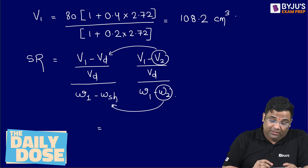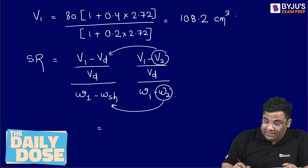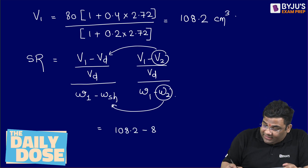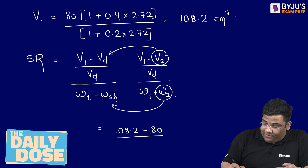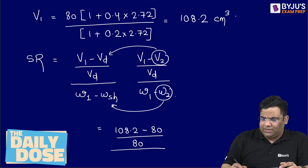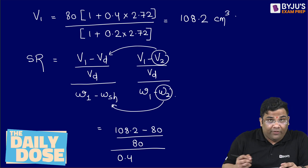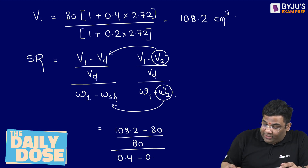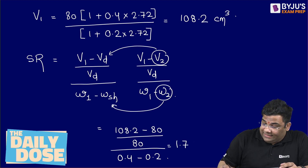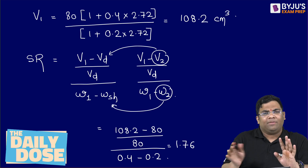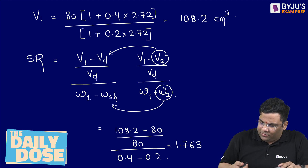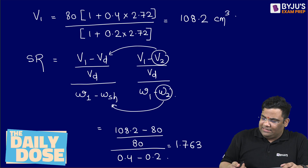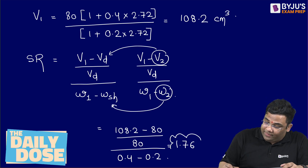The shrinkage ratio SR equals V1 minus VD, divided by VD, divided by W1 minus WSH. Substituting values: V1 is 108.2, VD is 80, W1 is 0.4, and WSH is 0.2. Solving this, we get a shrinkage ratio of approximately 1.76.